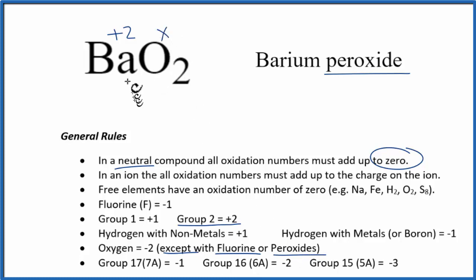So let's just call it x, because we know all these oxidation numbers add up to zero. So we could just set up an equation. We could say plus two for the barium, plus we have two oxygen atoms, and we're calling it x, that should equal zero.